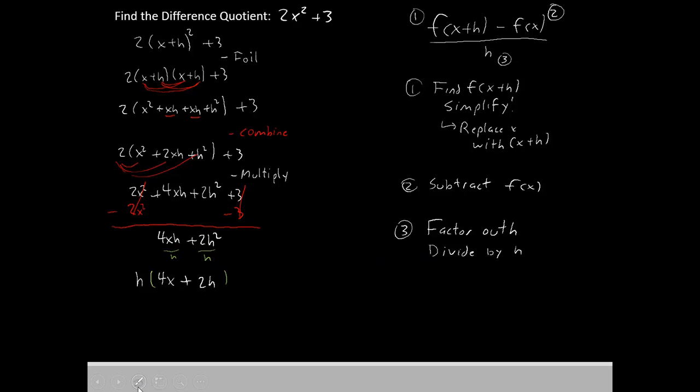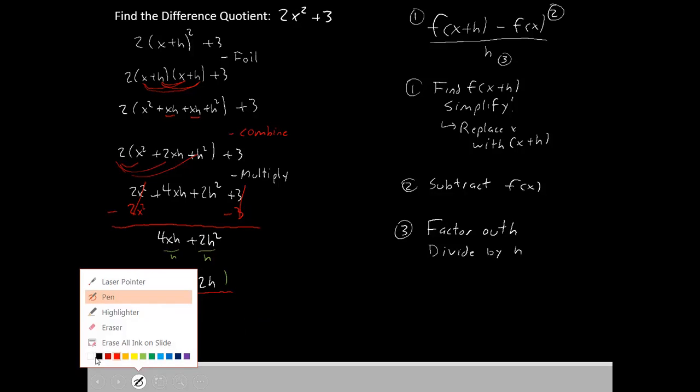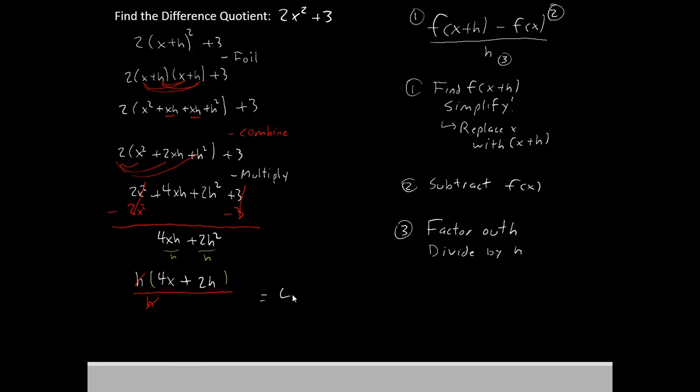Now that I've factored out h, it's okay to go ahead and divide by h. Now the h on the top and the h on the bottom cancel out, and so my answer is simply 4x plus 2h. And there you have it. That's the difference quotient.